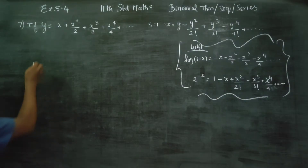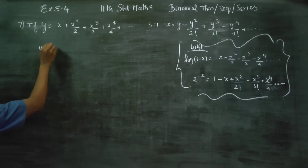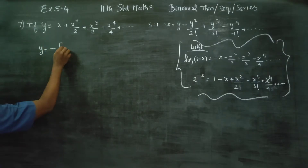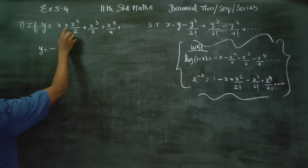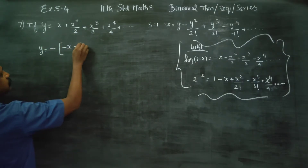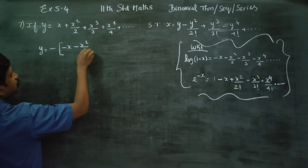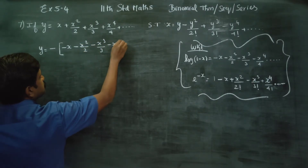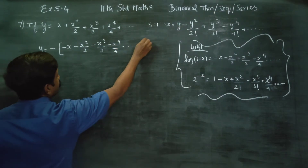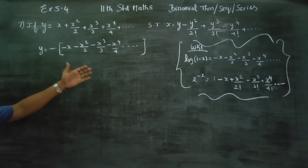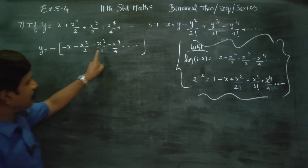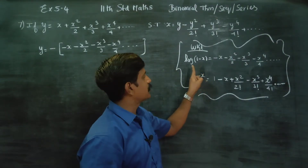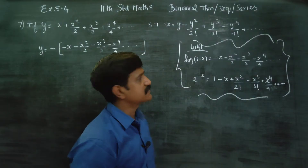When we write it out, taking the first one, from inside the full expression, taking 1 minus common, then minus common, we get: minus x, minus x square by 2, minus x power 3 by 3, minus x power 4 by 4, dot dot dot. Taking that minus out, we have a ready-made formula: log(1 minus x).